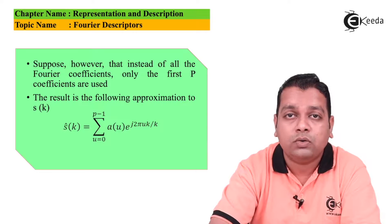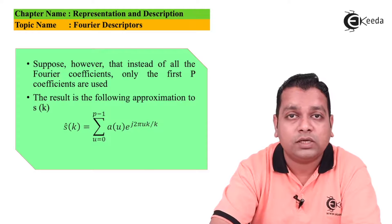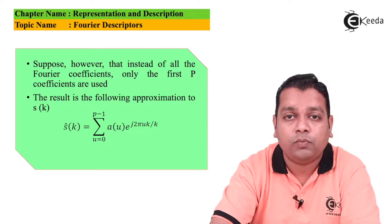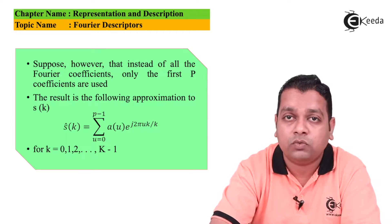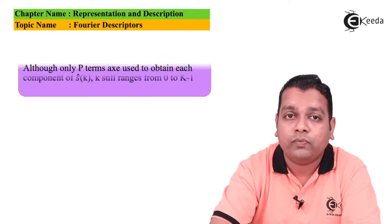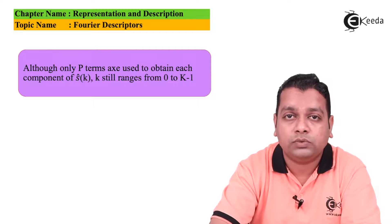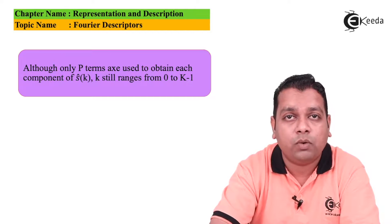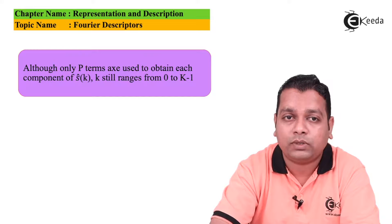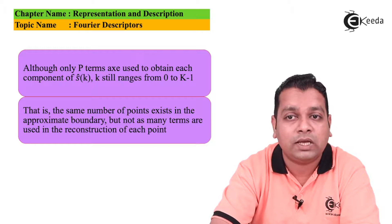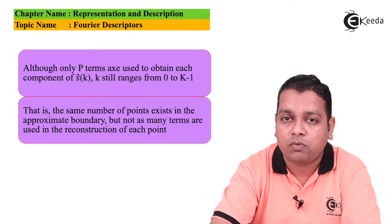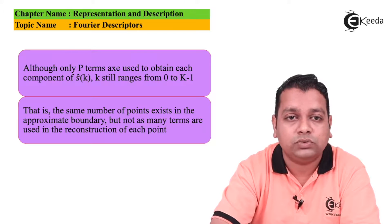where k still ranges from 0 to K-1. Although only P terms are used to obtain each component of ŝ(k), k still ranges from 0 to K-1 — the same number of points exist in the approximate boundary, but not as many terms are used in the reconstruction of each point.